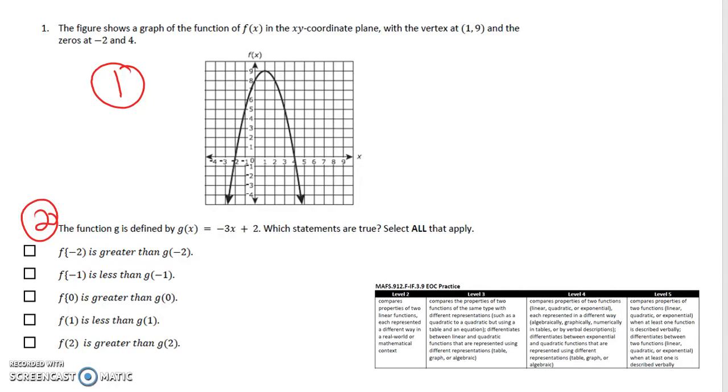It wants us to check these ones that apply. f(-2) is greater than g(-2). So at f(-2) we're right here at zero. To figure out what g(-2) is, we have to plug in and solve. If I plugged in and solve, g(-2) would actually be at 8, so that's not true.